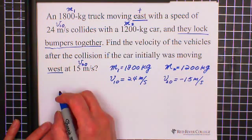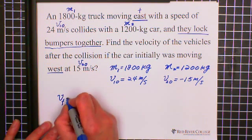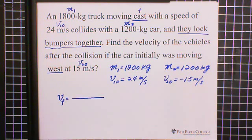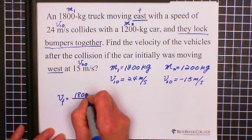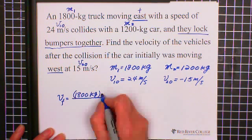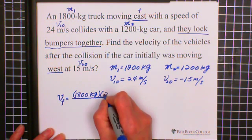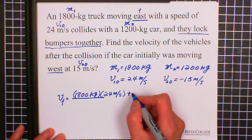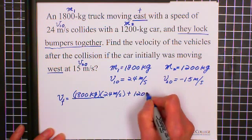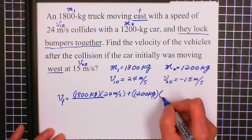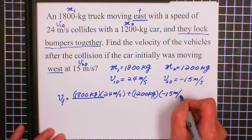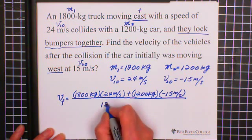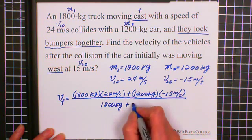Then we can plug into the formula. We have V final equals M1 is 1800 kilogram multiply V1 initial is 24 meter per second, plus M2 which is 1200 kilogram multiply V2 initial which is negative 15 meter per second, and divide M1 plus M2 which is 1800 kilogram plus 1200 kilogram.